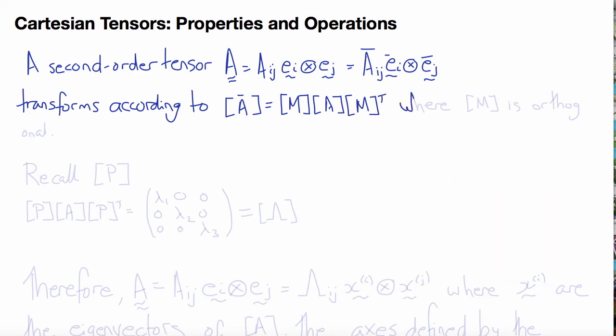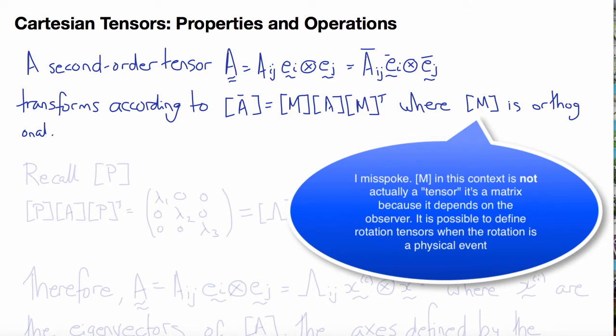These components between the two frames of reference transform according to the rule we've seen before, using the orthogonal rotation tensor M. So A bar would be equal to M A M transpose, and the inverse of that, converting from the new frame to the old frame, A equals M transpose A bar M.